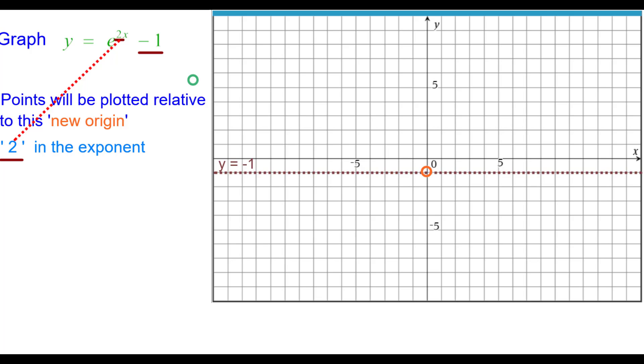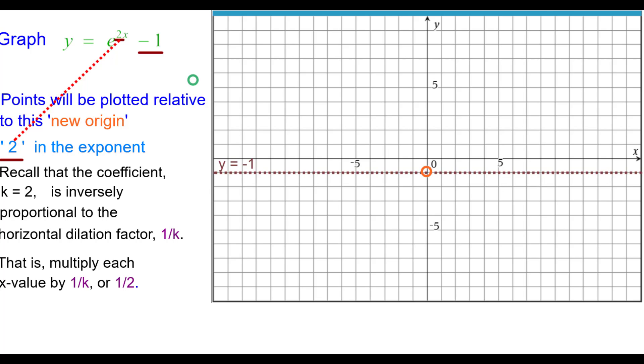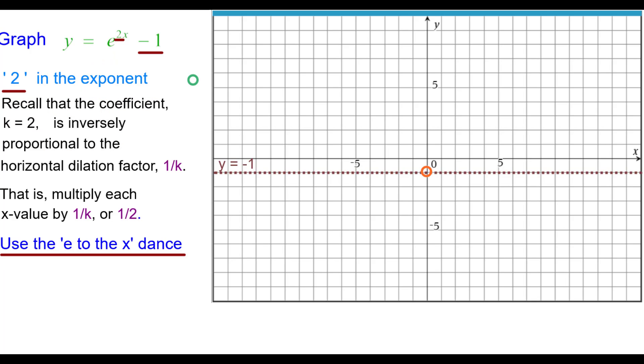The 2 is in the exponent. Recall that the coefficient 2 is inversely proportional to the horizontal dilation factor, the reciprocal of that. That is, we're going to multiply each x value by the reciprocal of 2, which is 1 half.